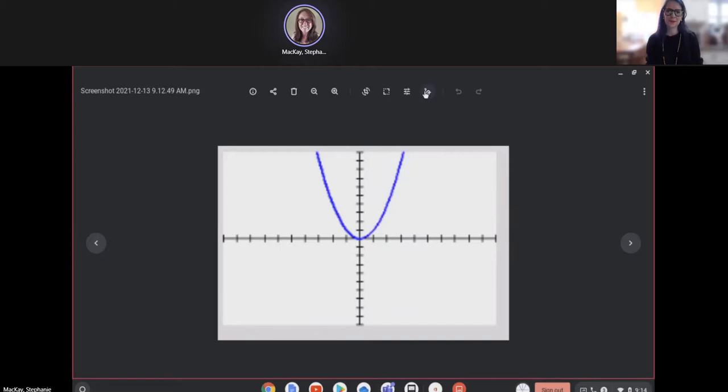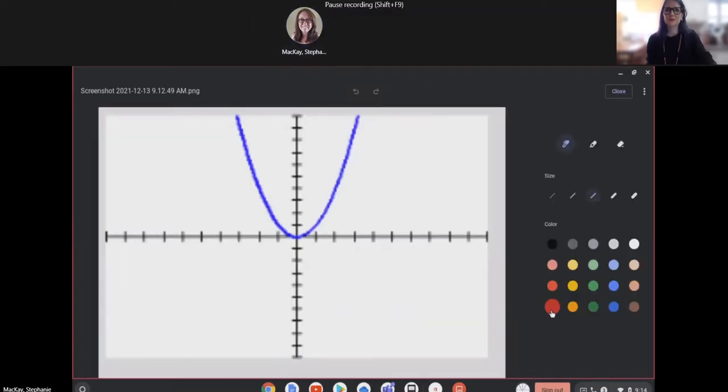Right at the top of the screen we've got this little squiggling annotate. I'm going to select that and then I can choose a color and I can make the ink on the graph and provide my thinking.